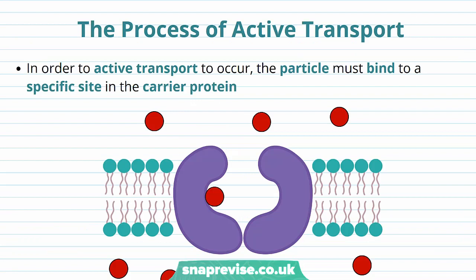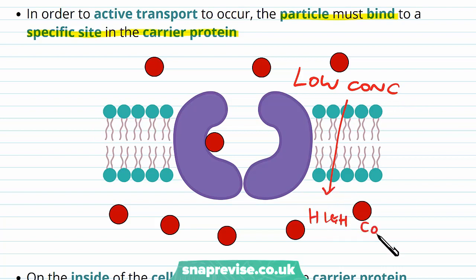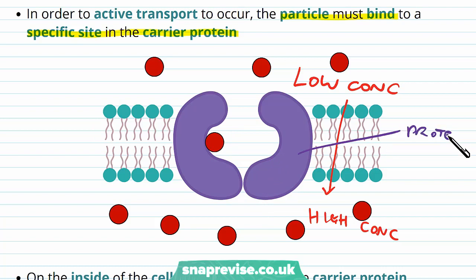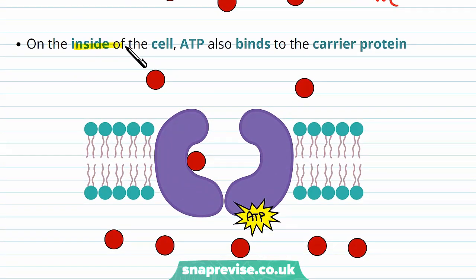In order for active transport to work, the particle needs to bind to a specific site in the carrier protein. Here we have our cell membrane again, and the overall objective is to move a red particle from its area of low concentration to an area of higher concentration. Proteins are normally built with a specific 3D shape, and will only fit the correct specific particle and move it in the correct specific direction. So the carrier protein needs to have a specific binding site for that particle, and different carrier proteins for different particles will have slightly different 3D shapes and binding sites. On the inside of the cell facing the cytoplasm, ATP binds to the carrier protein at a slightly separate site.